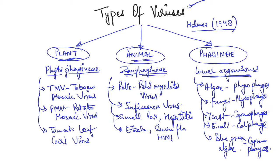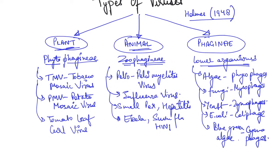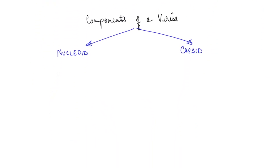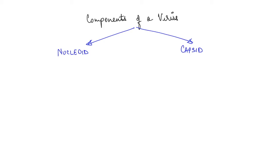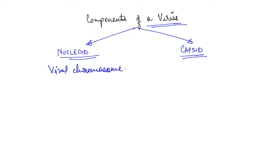These are some important viruses which occur in different organisms — just remember the names for the exam. Now we are going to study the components of a virus. Components of a virus can be of two types: one is the nucleoid and the other is the capsid. The nucleoid basically represents the viral chromosome.